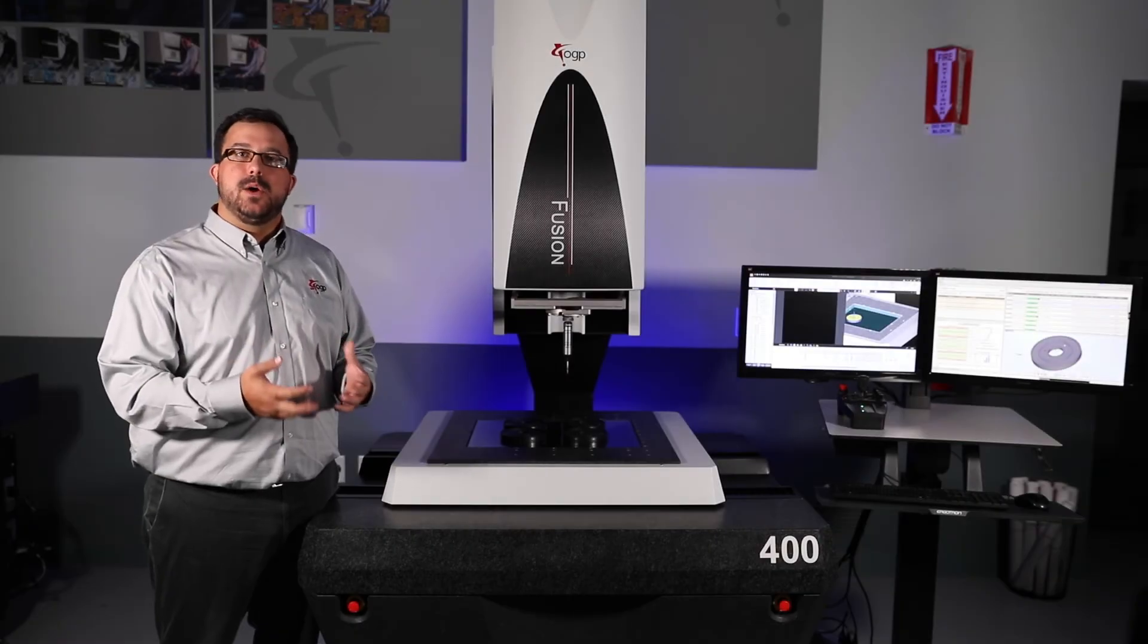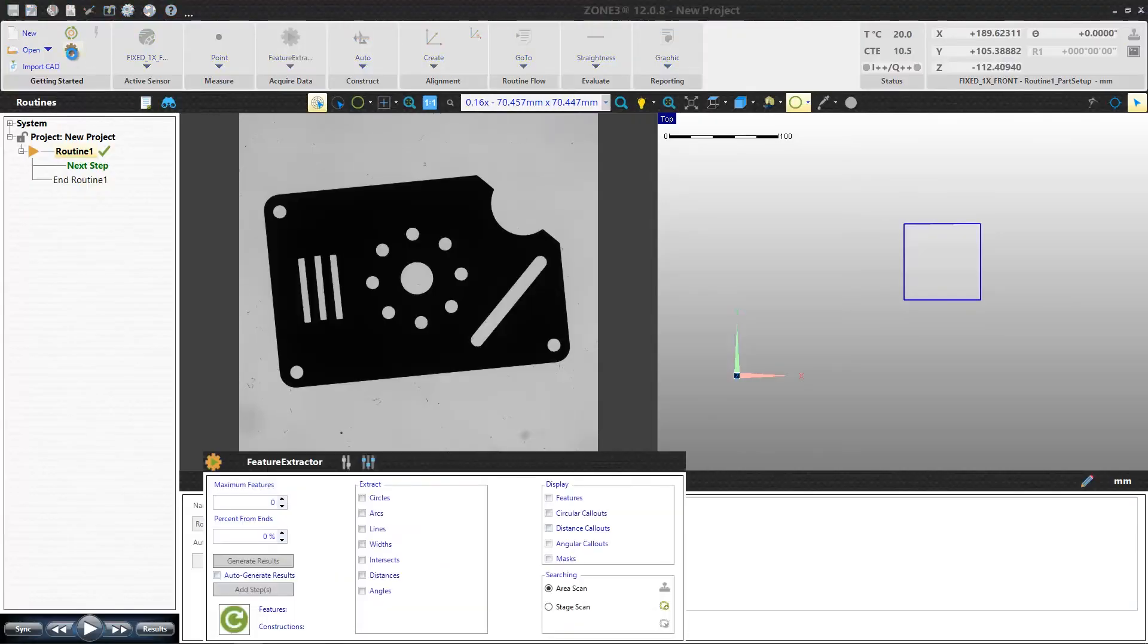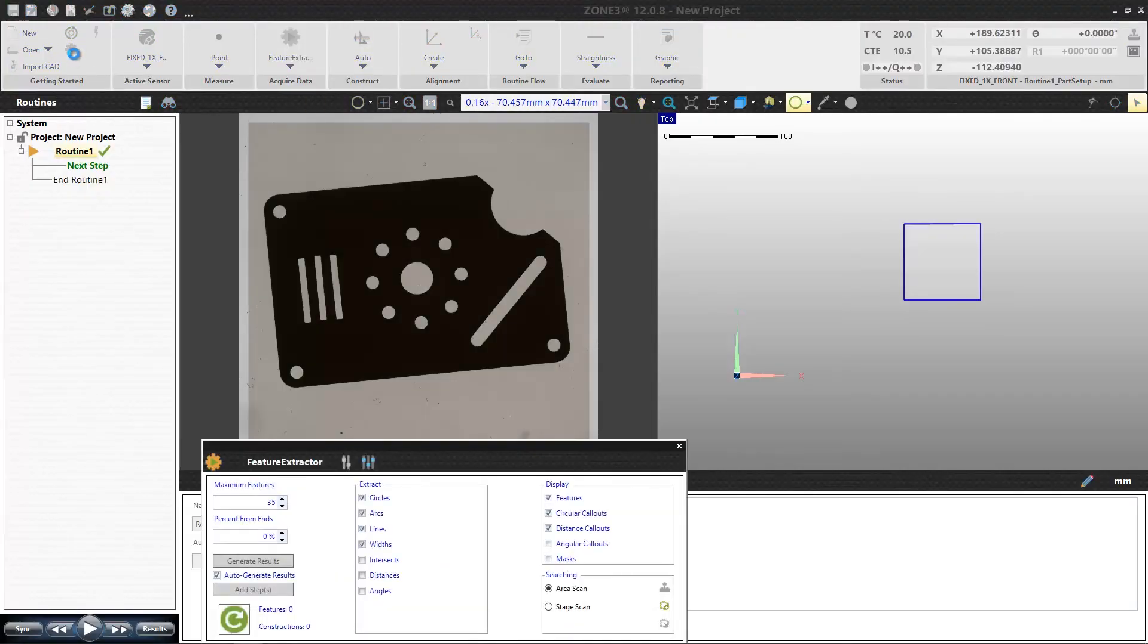Fusion systems are powered by zone 3, which gives users the power of 3D and CAD based measurements with all sensors.